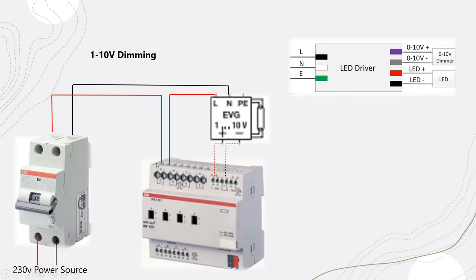For the 1-to-10V dimming wiring, you take the live cable from the electrical DB to the input of the channel. The live from that channel goes to the driver — the 0-10V light requires a driver. The neutral goes directly to the electrical DB. You then pull a communication control cable — the same 1mm two-core or 1.5mm two-core cable used in BMS — from the 0-to-10V control signals to the light driver. You can loop to the next bulb, so ten lights in one room can be looped together as one spotlight circuit. Channel B follows the same method.